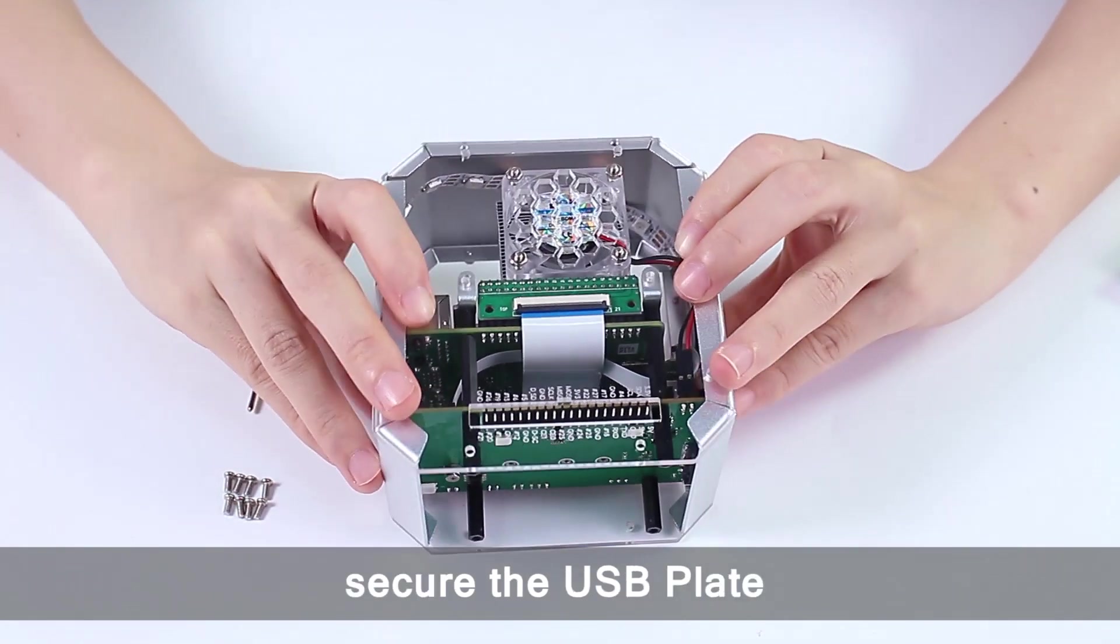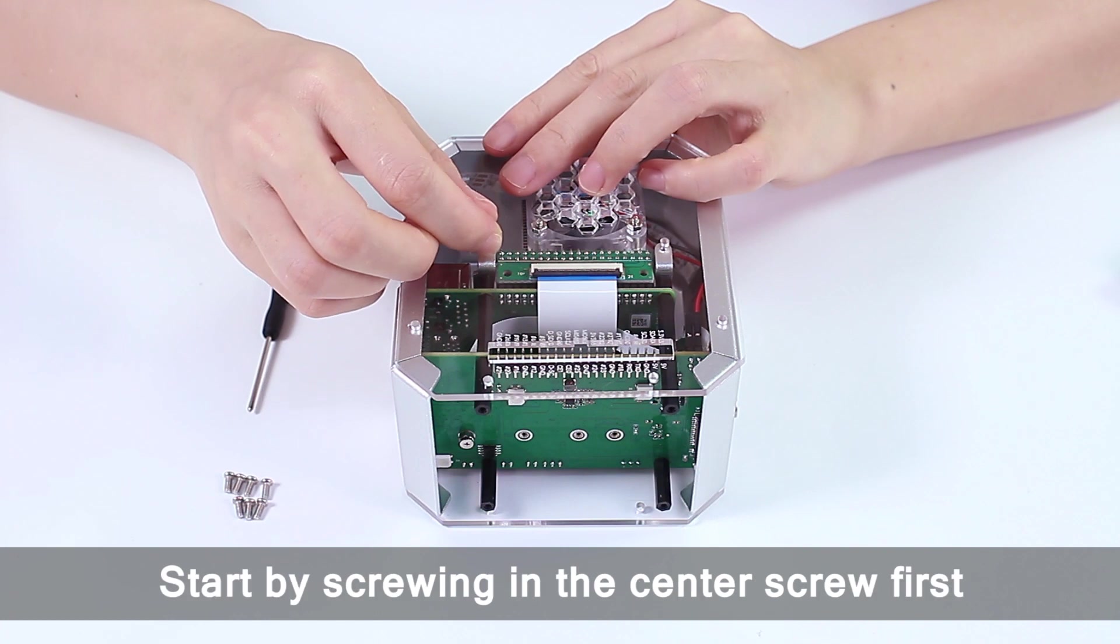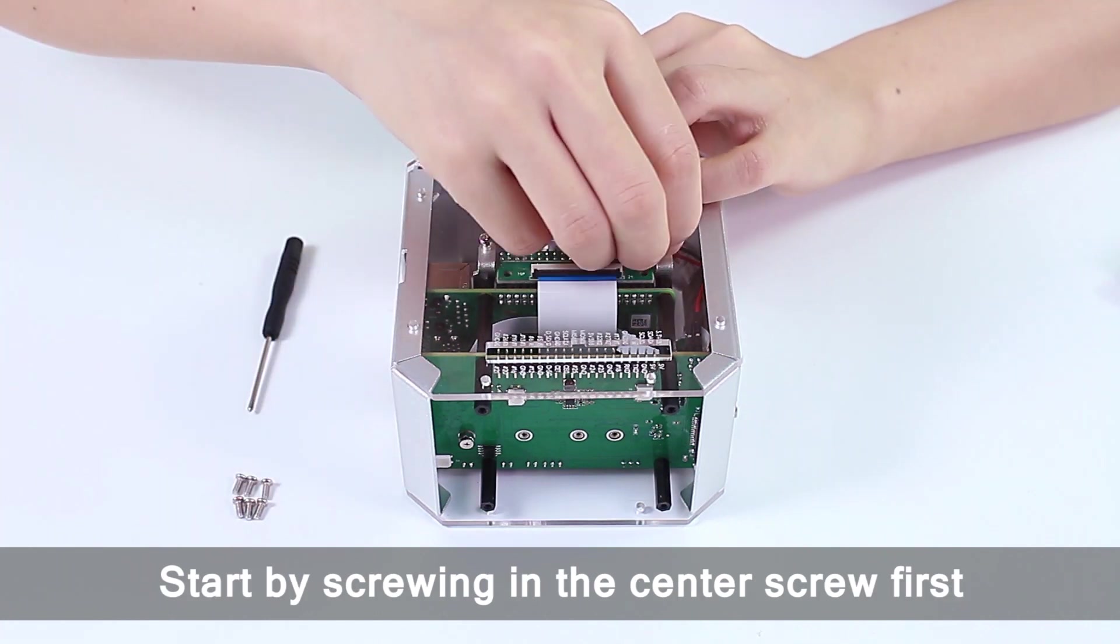Now plug the USB plate on. After that, secure the USB plate with the M2.5 by 6 screws. Start by screwing in the center screw first.